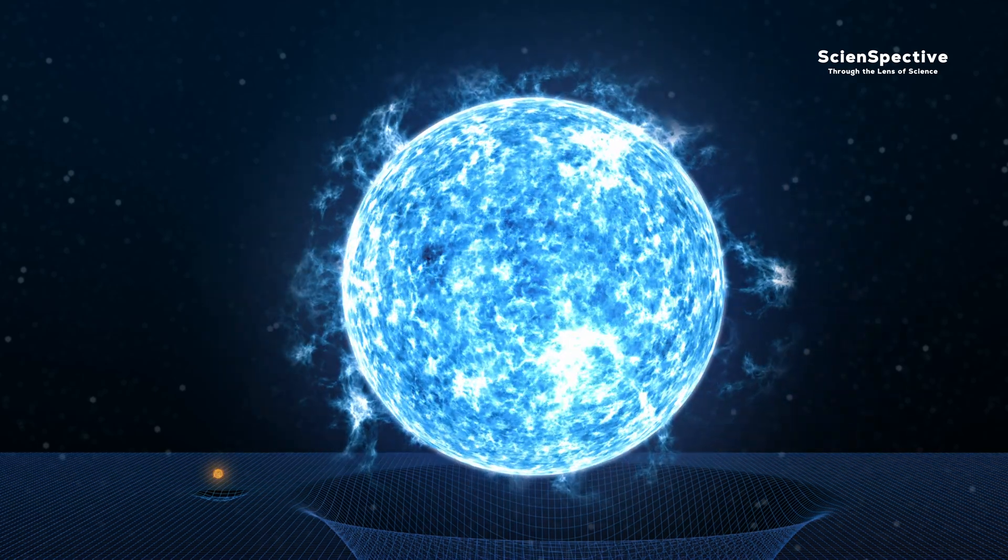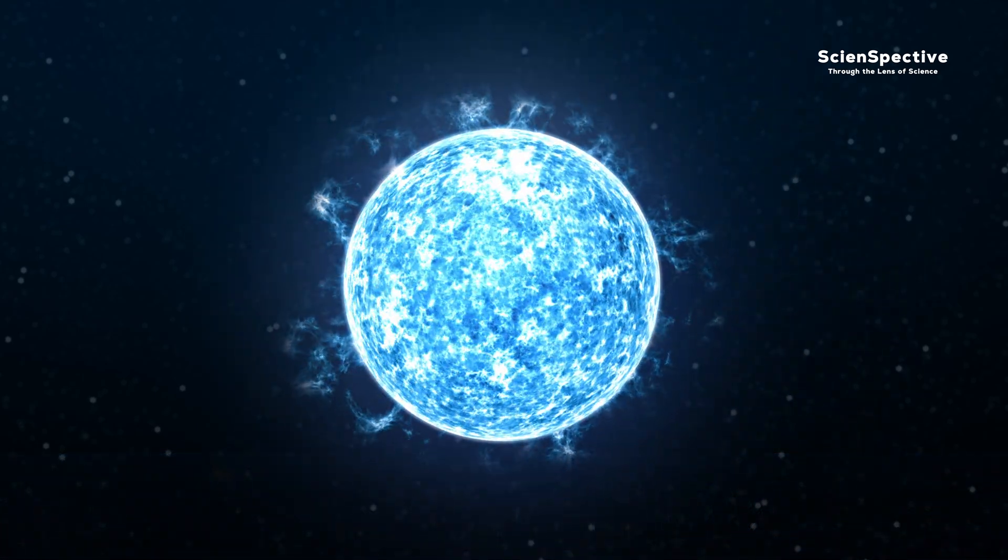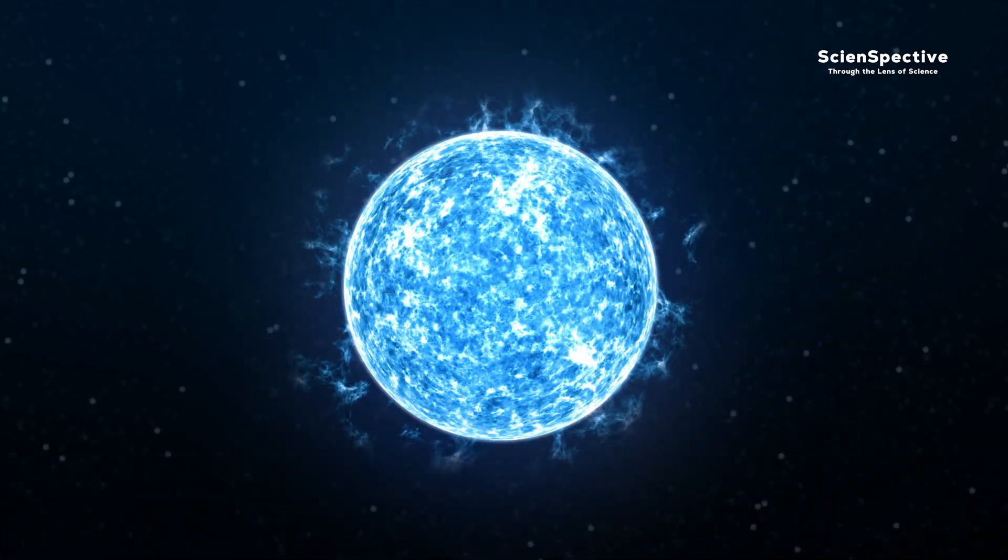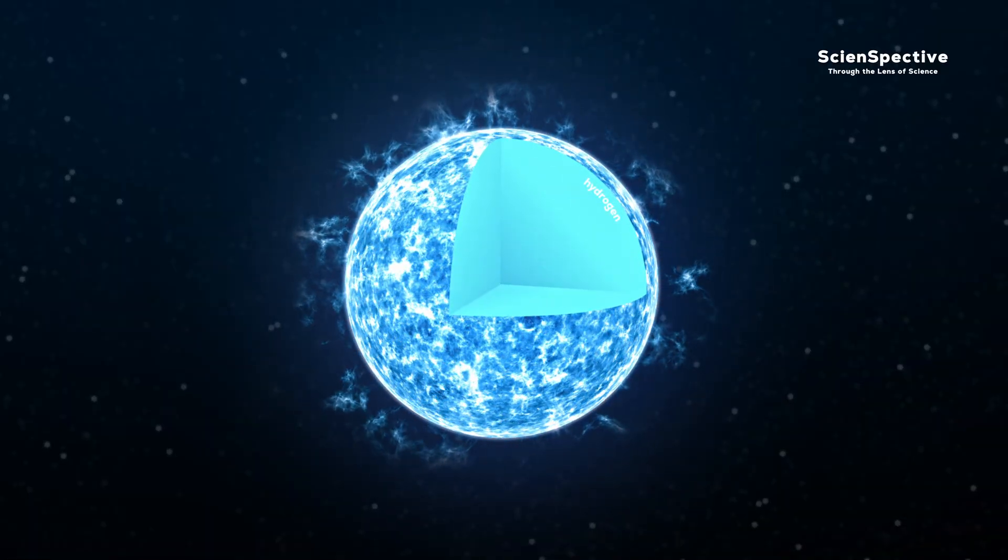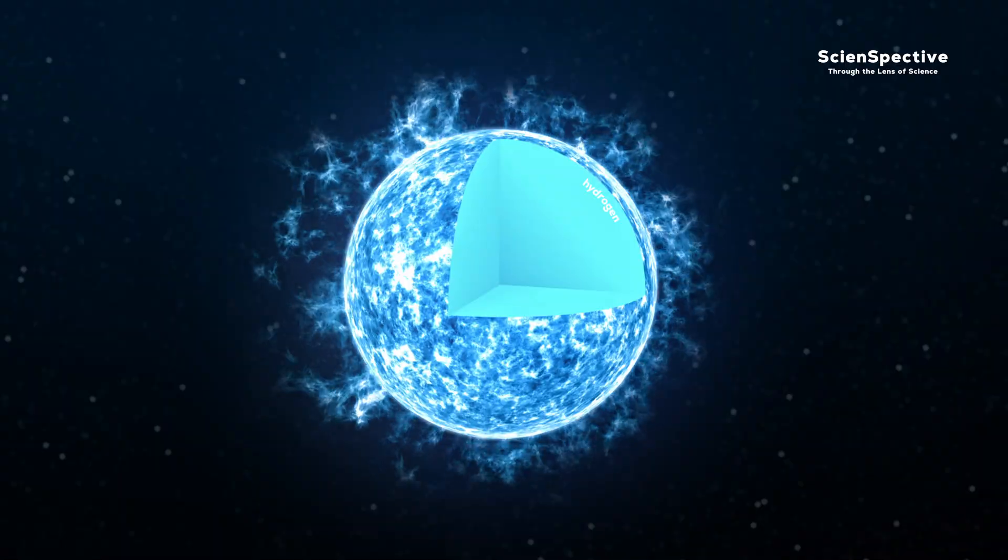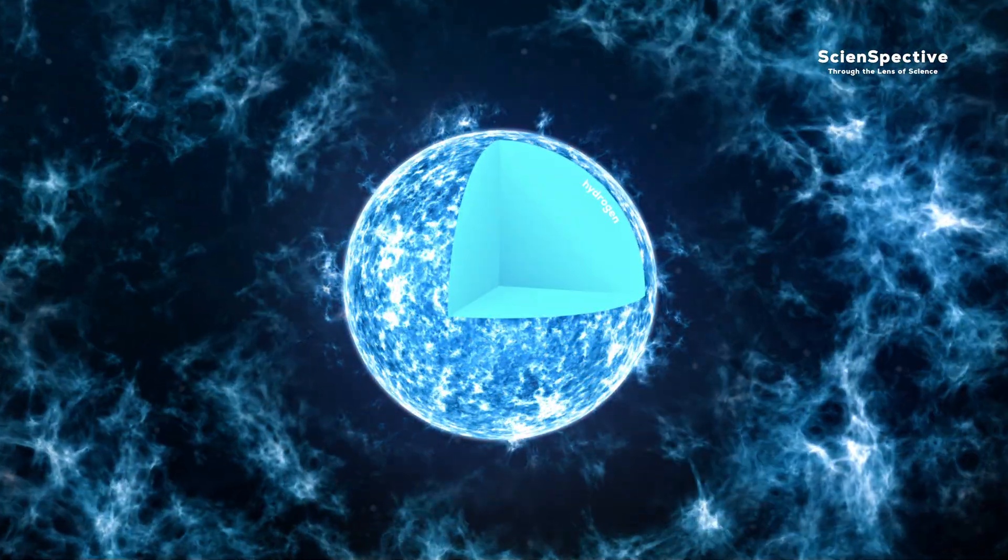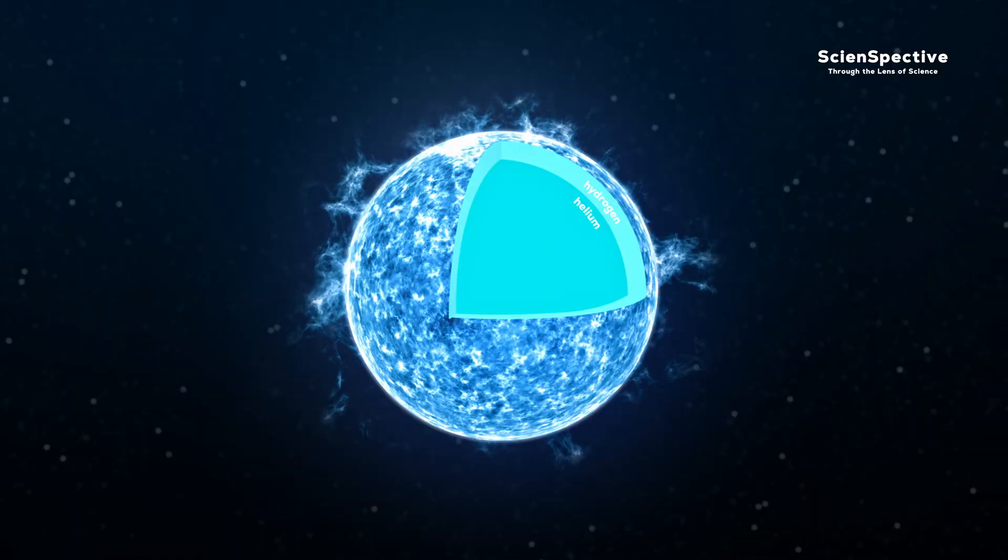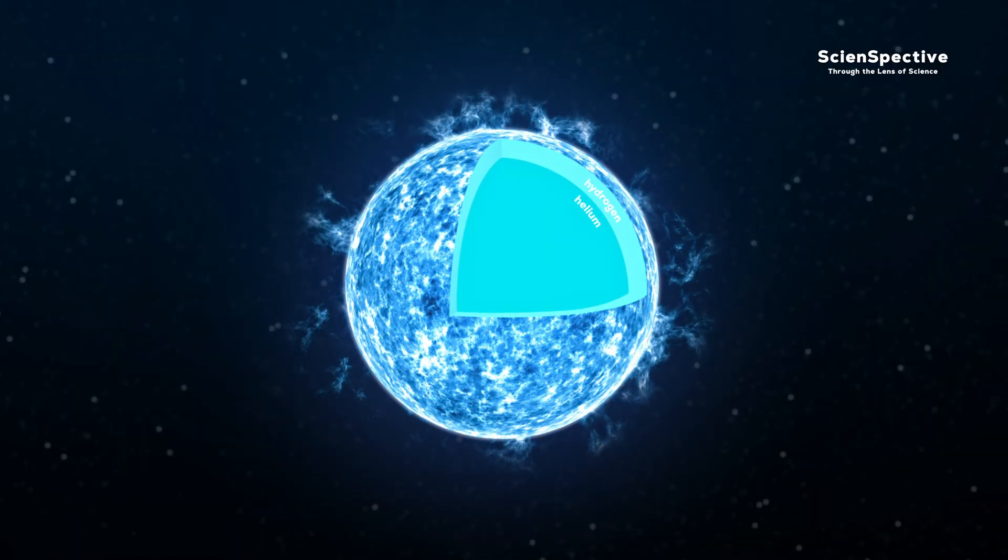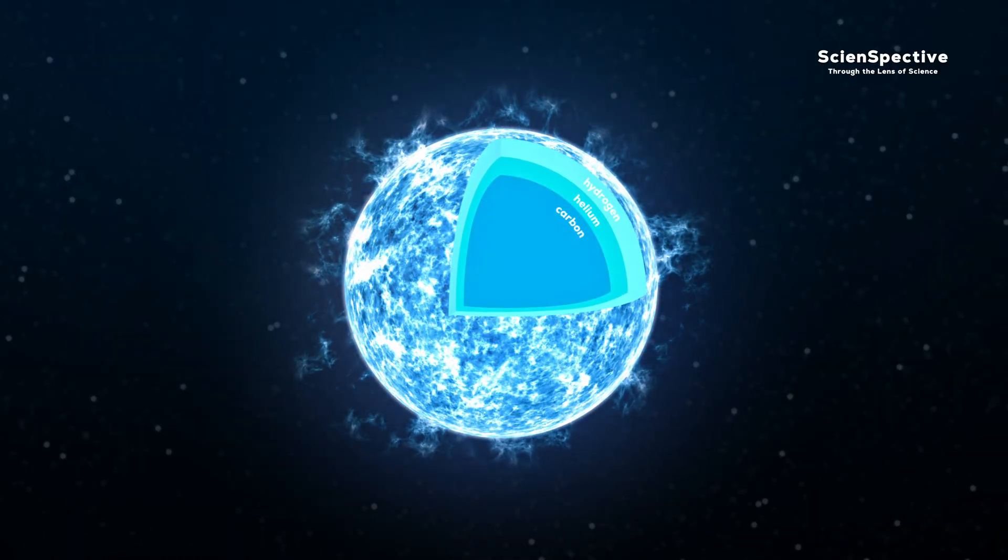As hydrogen runs out, the star's core begins to shrink. As a result, the material becomes hotter. The released energy pushes the star's outer layers further out. The helium forming the contracting core becomes so hot that it fuses further, turning into a heavier element, carbon.